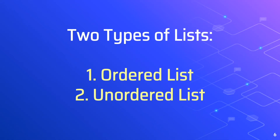There are two types of lists to choose from: ordered list and unordered list. An ordered list is one that uses numbers, letters, Roman numerals, or a combination like this.